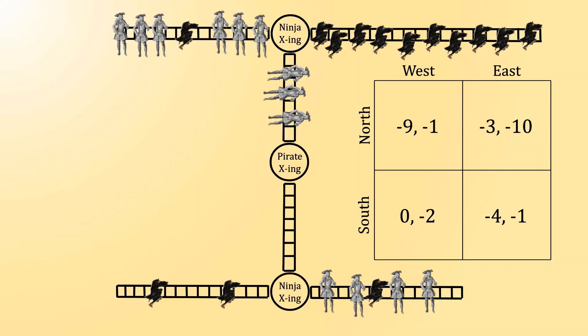For example, imagine that the pirate plays north with probability p, and south with probability 1-p. Then the ninja's payoffs for choosing west and east are as follows.